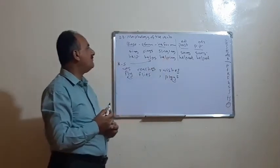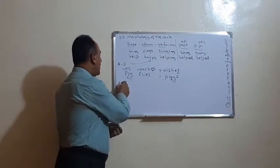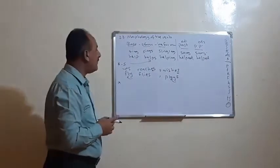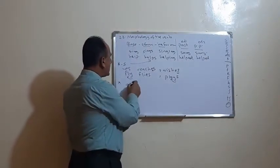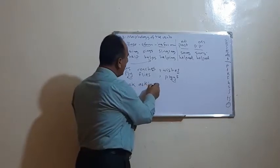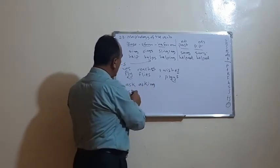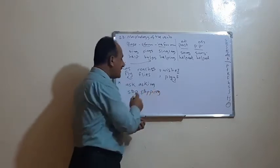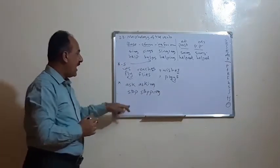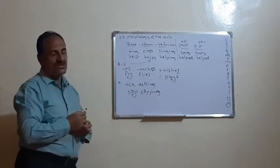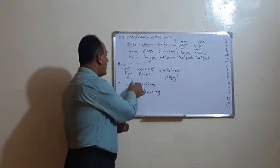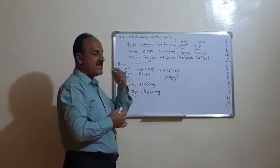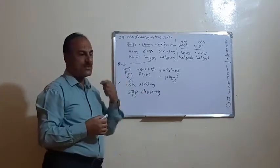Relating to the ing-form, mostly we just add -ing, but there are exceptions. If we have 'ask', we directly say 'asking'. But in the case of 'stop', we double the final consonant -p and then add -ing, giving 'stopping'. This is because the final consonant is preceded by a single vowel, whereas in 'ask' the -k is preceded by a consonant.